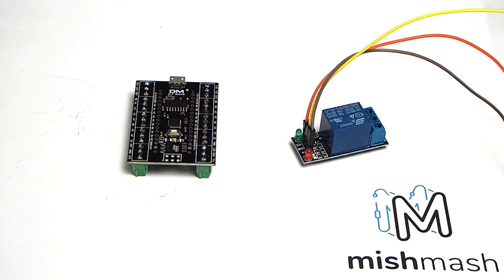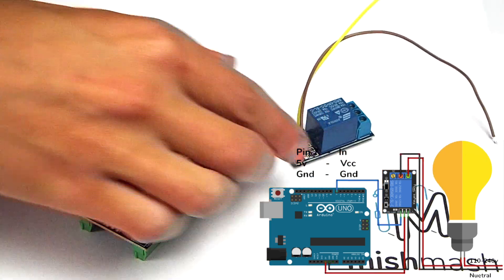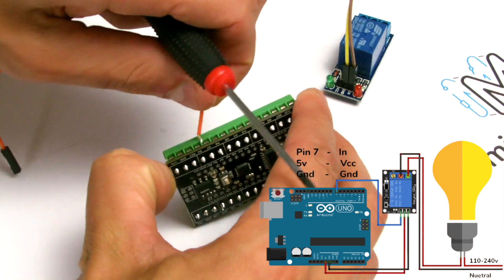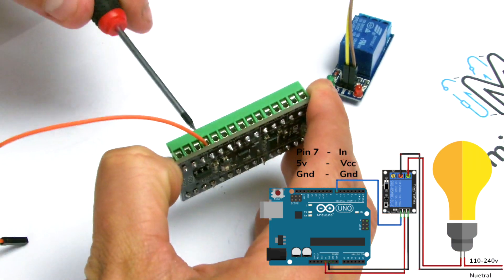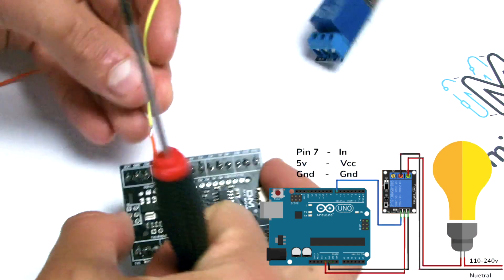Once complete, we can make the connections on the Arduino. We can now terminate the connections on the Arduino Nano. First, we connect the jumper cable from the 5V supply pin on the Arduino Nano to the VCC pin on the relay.